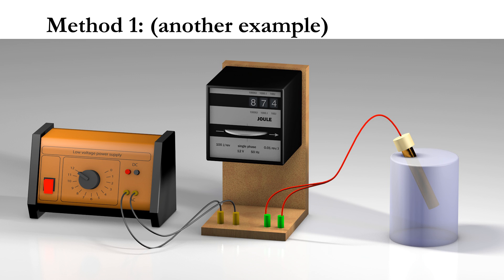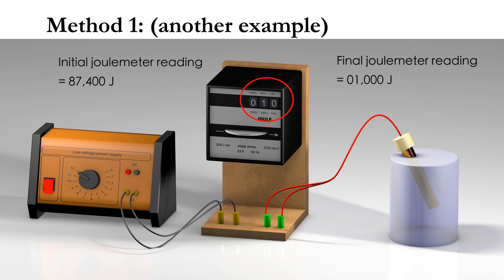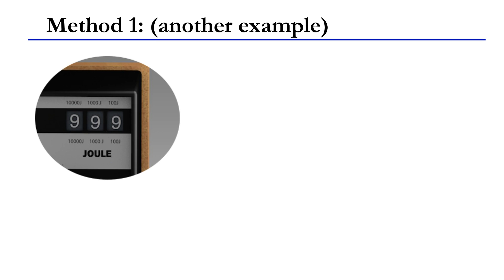Let's look at another example. Suppose the initial reading is 87,400 joules and the final reading is 01,000 joules. The subtraction will give a negative number. Do you think this is possible? In fact, since the joulemeter can only show 3 digits,